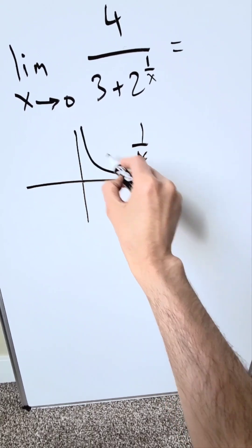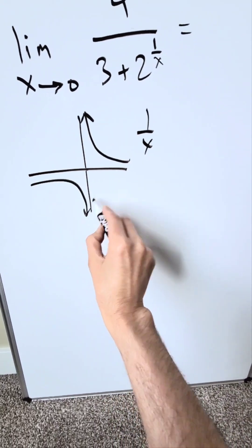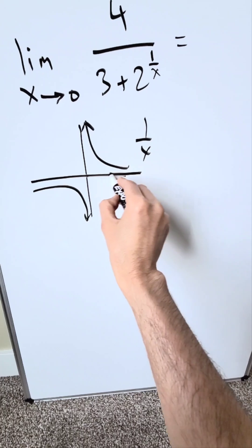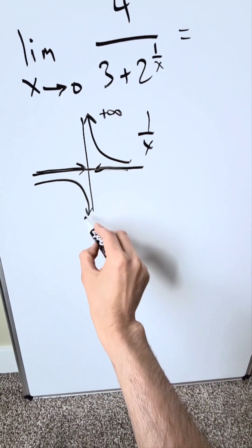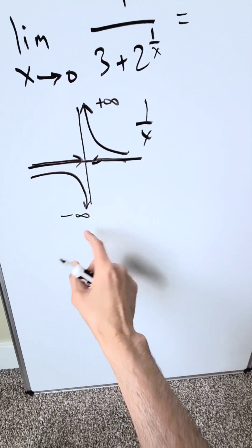You know 1 over x looks something like this in terms of a function graph. If you are approaching 0 from the right, your function is shooting up towards positive infinity. If you are approaching 0 from the left, your function is dipping down towards minus infinity.